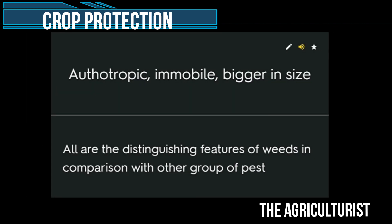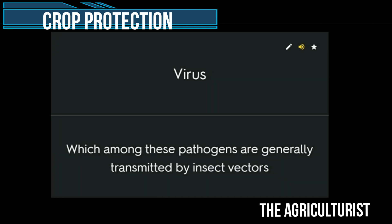Orthotropic, immobile, bigger in size — all are distinguishing features of weeds in comparison with other groups of pest. Virus — the pathogen generally transmitted by insect vectors.